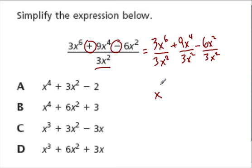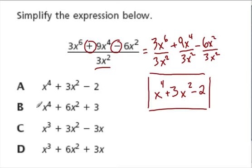We have x to the sixth over x to the second. That's x to the sixth minus 2, which is 4, plus we're adding 3. 9 divided by 3 is 3, times x to the second, minus 6 divided by 3 is 2, and x squared divided by itself is just 1. So here's our answer. And where do I see that? Right here, choice A.